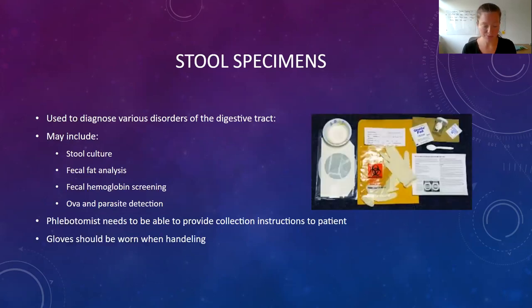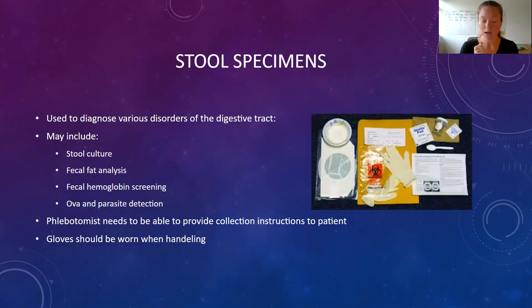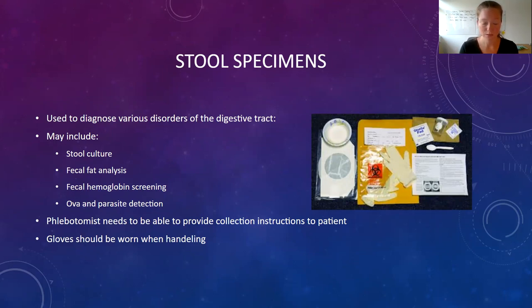Stool specimens are used to diagnose a variety of things going on in our GI system or digestive tract. Stool specimens can be stool cultures, fecal fat analysis, hemoglobin screening to check for blood, or ova and parasite testing to check for different parasites in the stool. As a phlebotomist, you may sometimes be responsible for instructing patients on how to properly collect these specimens. Make sure you've read the standard operating procedures and the manual so you're giving appropriate instructions.